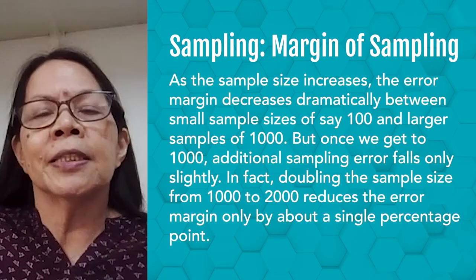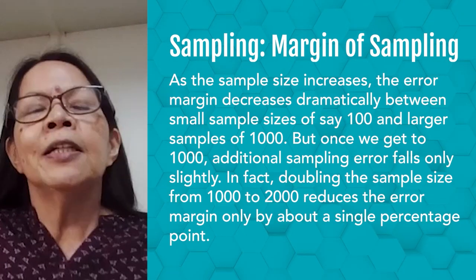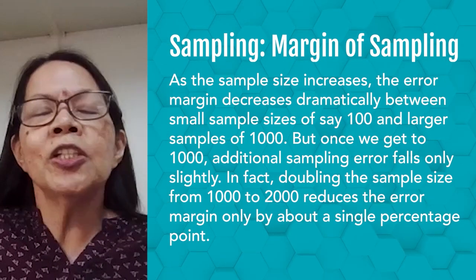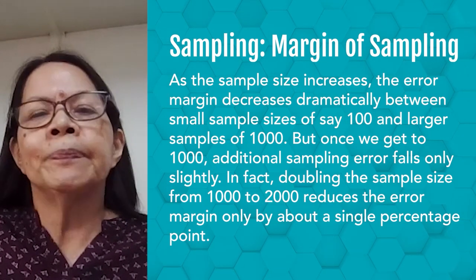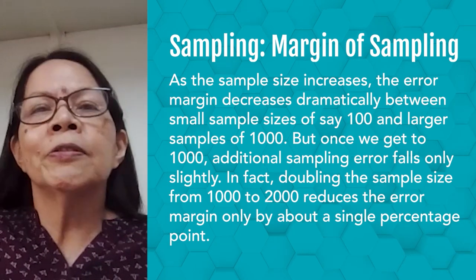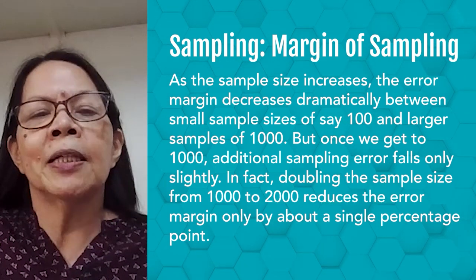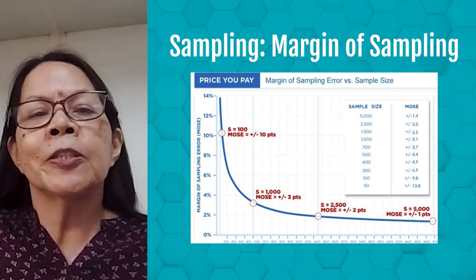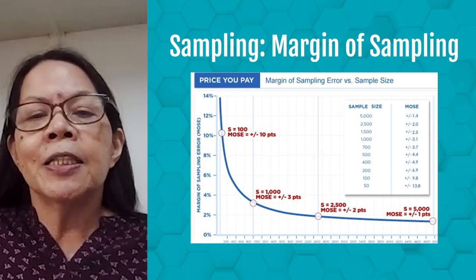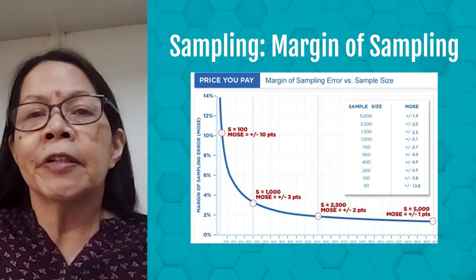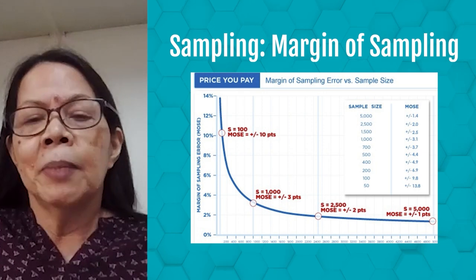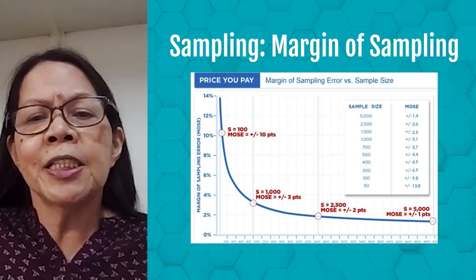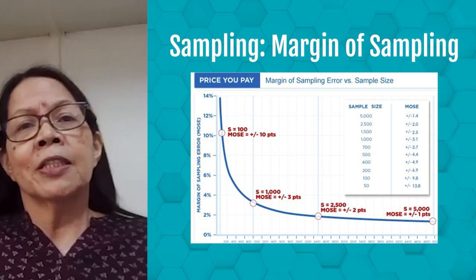The larger the sample size, the smaller the error margin. As the sample size increases, the error margin decreases dramatically between small samples of around 100 and larger samples of 1,000. But once we get to 1,000, additional reductions in sampling error fall only slightly. In fact, doubling the sample size from 1,000 to 2,000 reduces the error margin by only about a single percentage point. This graph illustrates that the error margin is plus or minus 10 percentage points at a sample size of 100, plus or minus 3 points at 1,000, but only plus or minus 2 points at 2,500 — a reduction of just one percentage point compared to 1,000.